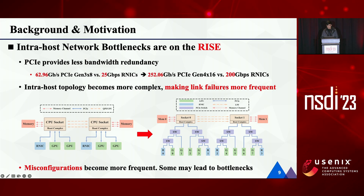However, intra-host bottlenecks received little attention before, because previous R-NICs had a low line rate, and the PCIe link could provide much more redundant bandwidth. Thus, the R-NIC could still reach the line rate even when some links degrade. However, as the R-NIC line rate increases rapidly, the PCIe link bandwidth does not increase equally. Thus, when intra-host links degrade, it's more likely to result in bottlenecks. Besides, link failures become more frequent as intra-host topology becomes more complex. In addition, as host configuration items increase, misconfigurations become more frequent, and some of them may lead to performance bottlenecks.